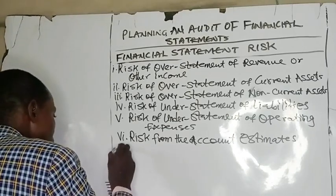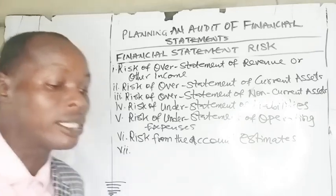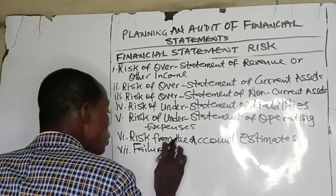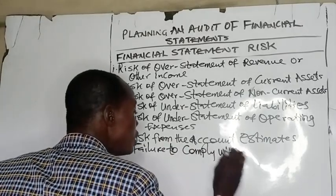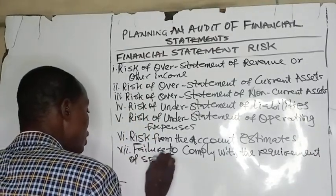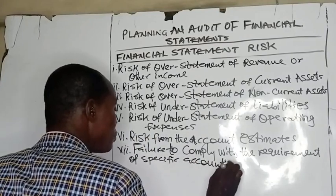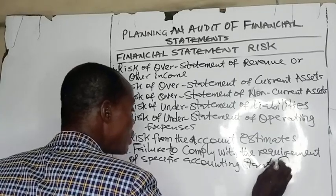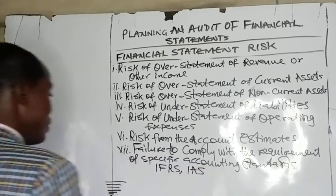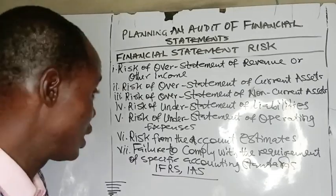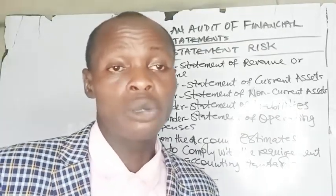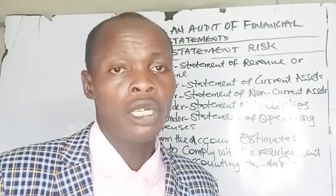Number seven, we have failure to comply with the requirements of specific accounting standards — such as IFRS and IAS — which will pose a significant risk to the entity. I will stop this session here. In my next video, I will solve questions from ICAM past questions covering both business risk and financial statement risk. Please don't forget to drop the love emoji and share the video with others.